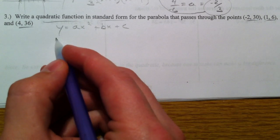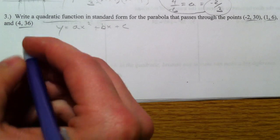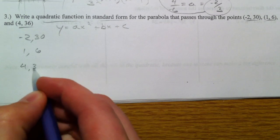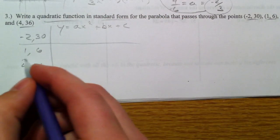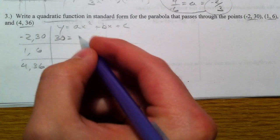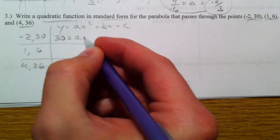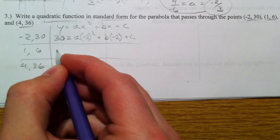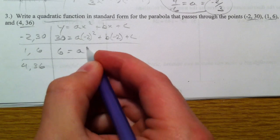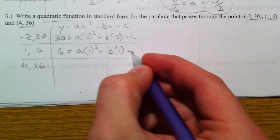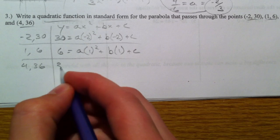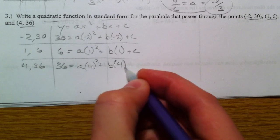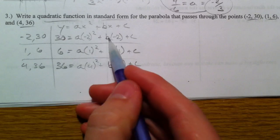So what we're going to do is we're going to make three of these equations. One for negative 2, 30, one for 1, 6, and one for 4, 36. We're going to make three equations based on that. So I'm going to plug in 30 equals a times negative 2 squared plus b times negative 2 plus c. 6 is the y equals a times 1 squared plus b times 1 plus c.